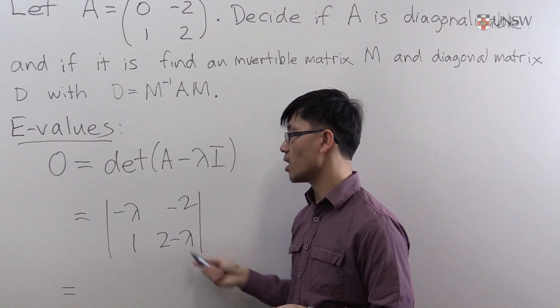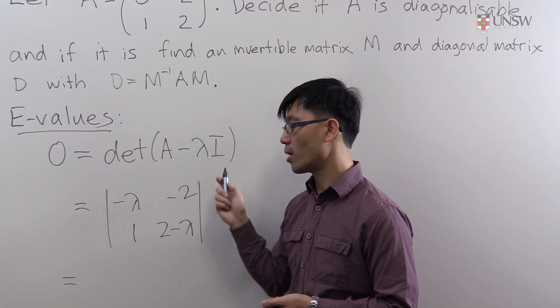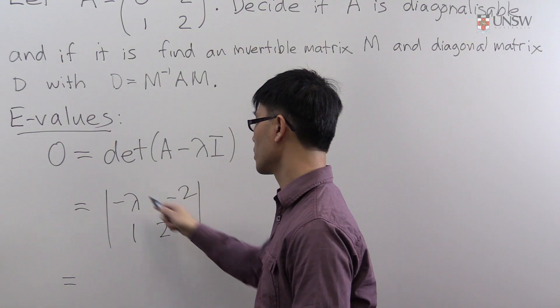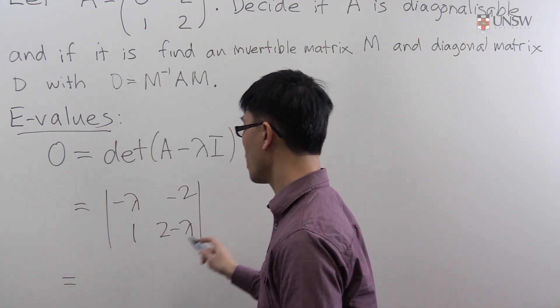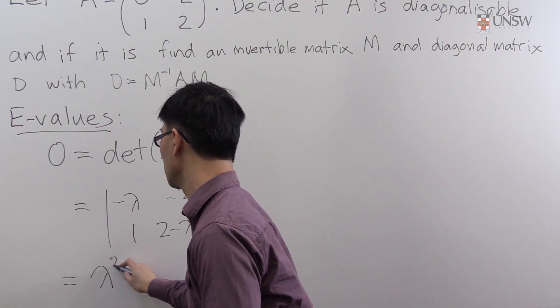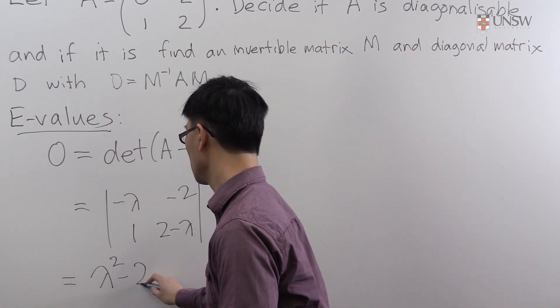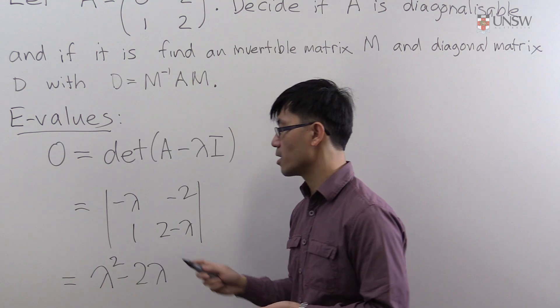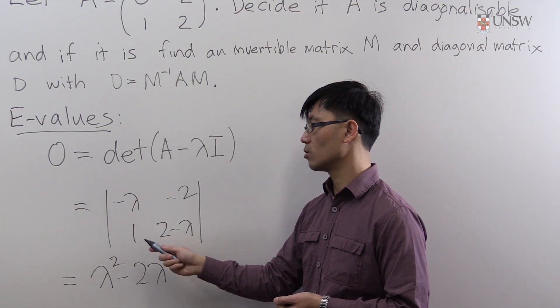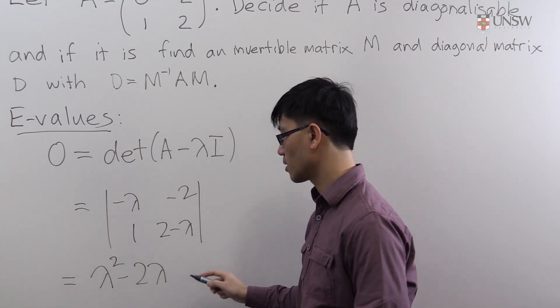Let's compute this determinant. It's just the product of the diagonal terms minus the product of the anti-diagonal terms. The product of the diagonal terms gives lambda squared minus 2 lambda. And then you have to subtract the product of the anti-diagonal negative 2, so subtracting that gives you plus 2.